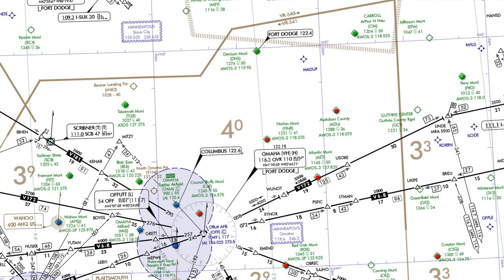IFR flying is packed with minimum altitudes to learn about. Most are depicted on a low-enroute chart, like this one near Omaha, Nebraska. The Off-Route Obstruction Clearance Altitude, OROCA, is designed for altitude planning on routes that aren't along published airways or procedures.